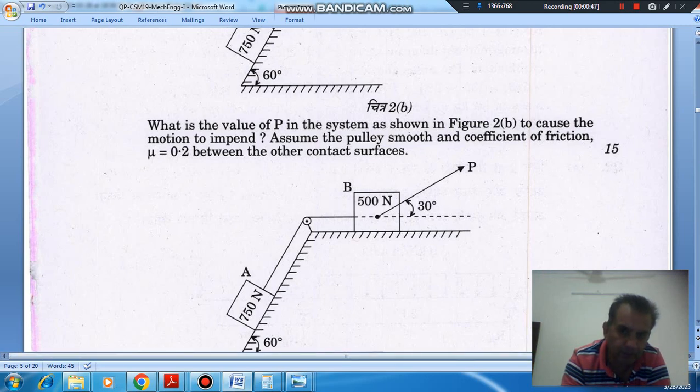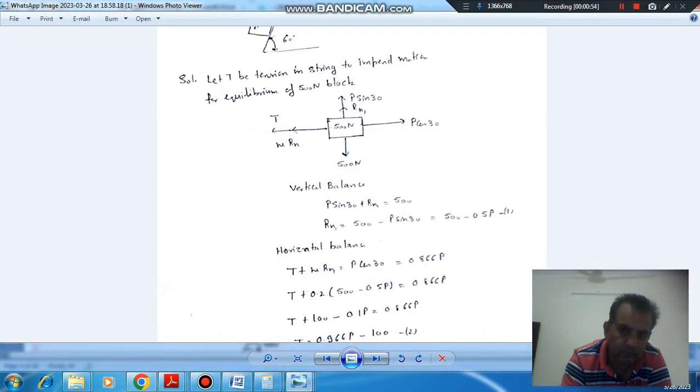And there will be weight acting on the block in downward direction and there will be normal reaction. So the forces acting on the 500N block are P cos 30, P sin 30, R_N1 and 500N downward.